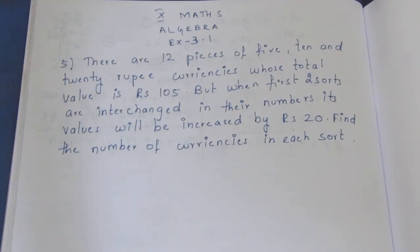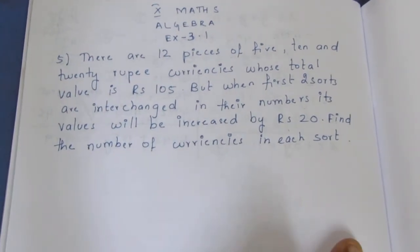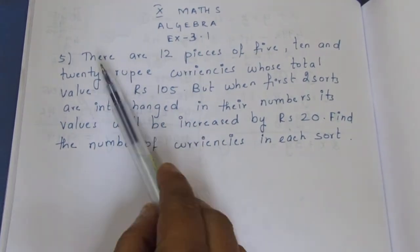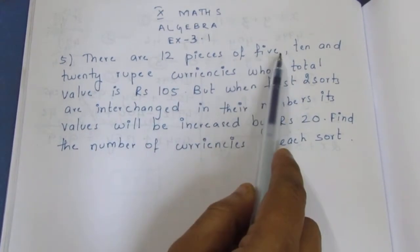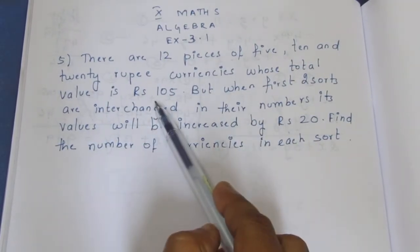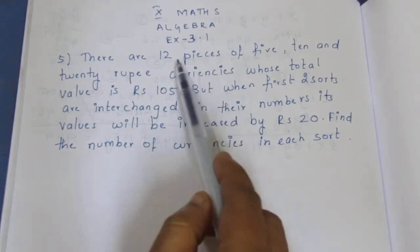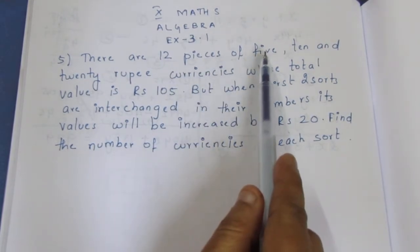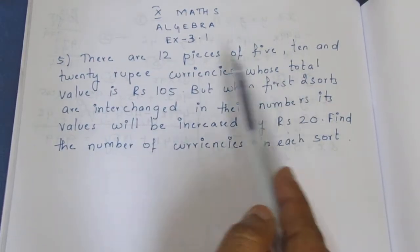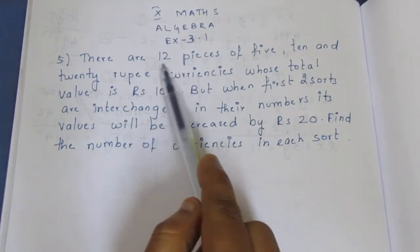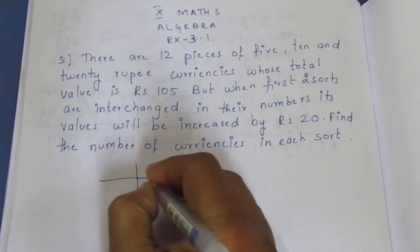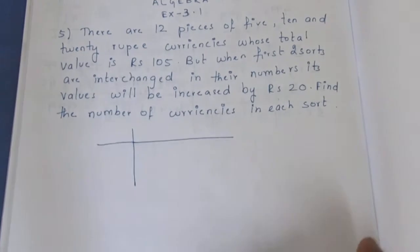Hello viewers, I am Mitli. In this 10th max algebra exercise 3.1, 5th sum video, there are 12 pieces of 5, 10 and 20 rupees currencies whose total value is rupees 105. So we have 12 pieces of 5 rupees, 10 rupees, and 20 rupees notes — the most 12 pieces. So we will see what we have to do with the number of notes.